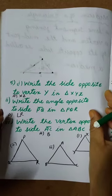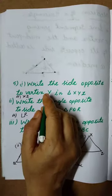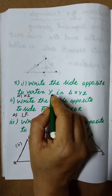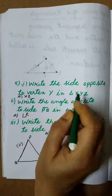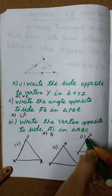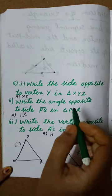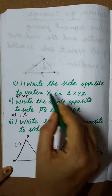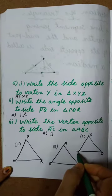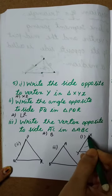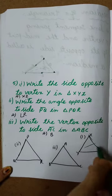Write the side opposite to vertex Y in triangle XYZ. In this triangle, we have to write the opposite side for vertex Y. Where is vertex Y? This is vertex Y. What is the opposite side? The opposite side is XZ.